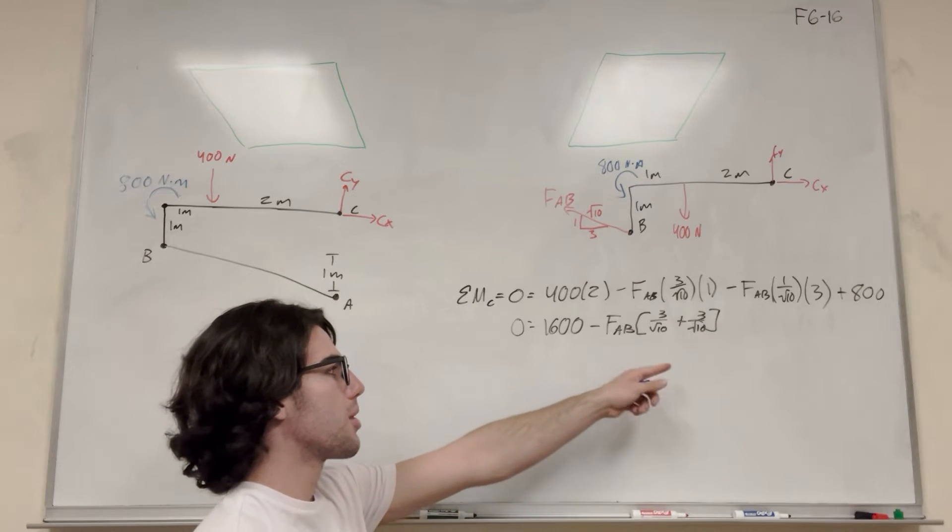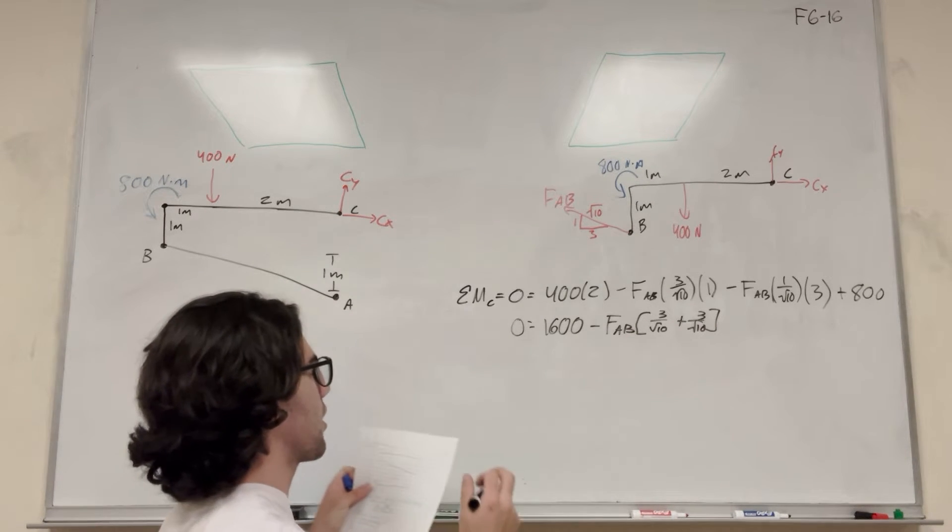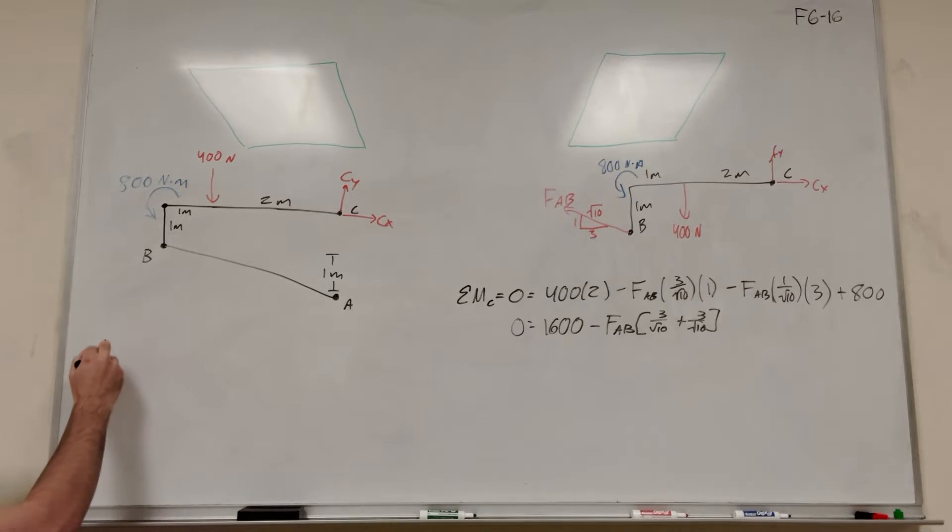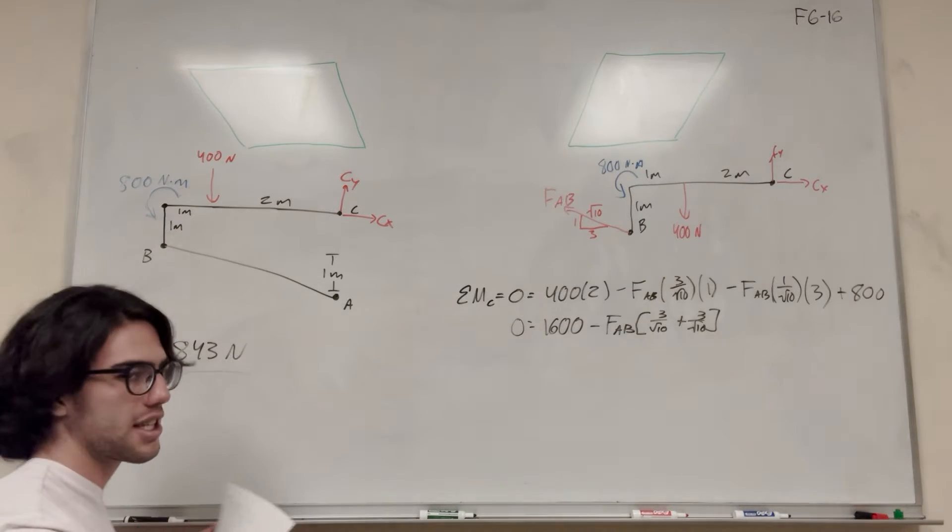So now this is really easy to solve. You're going to add this over and then divide by the denominator. Force AB is equal to 843 newtons. So that's how you do that.